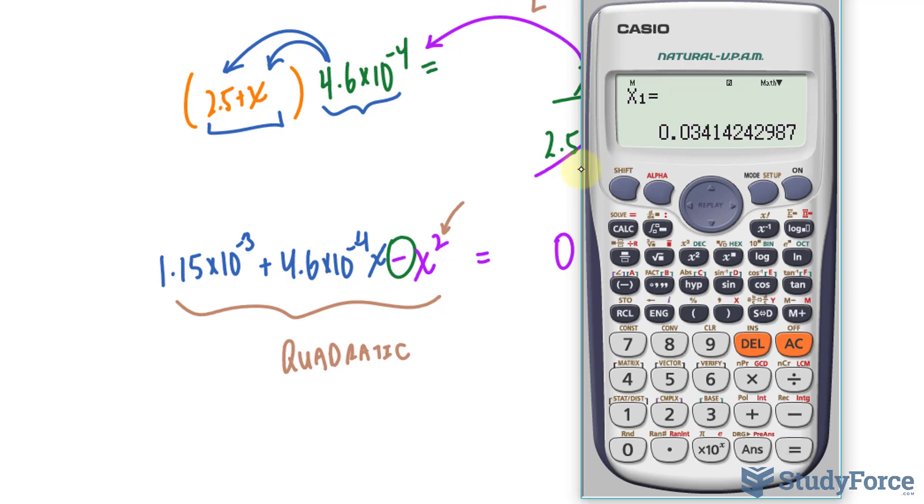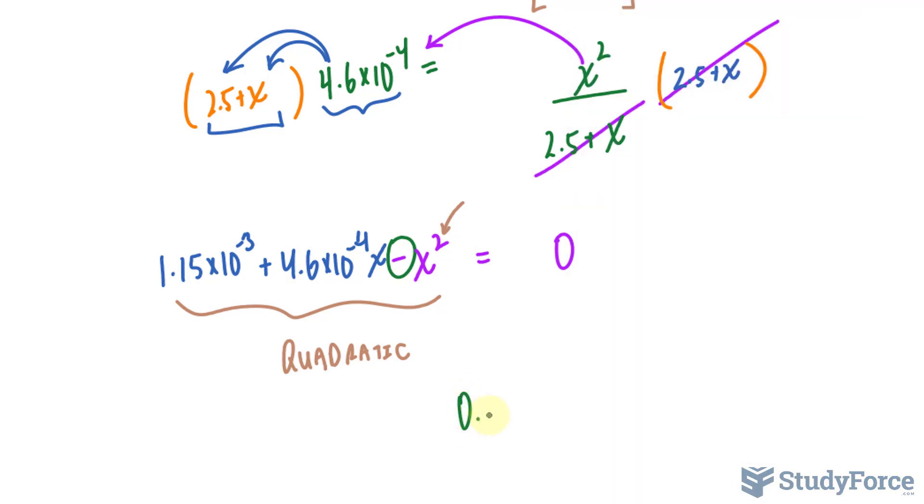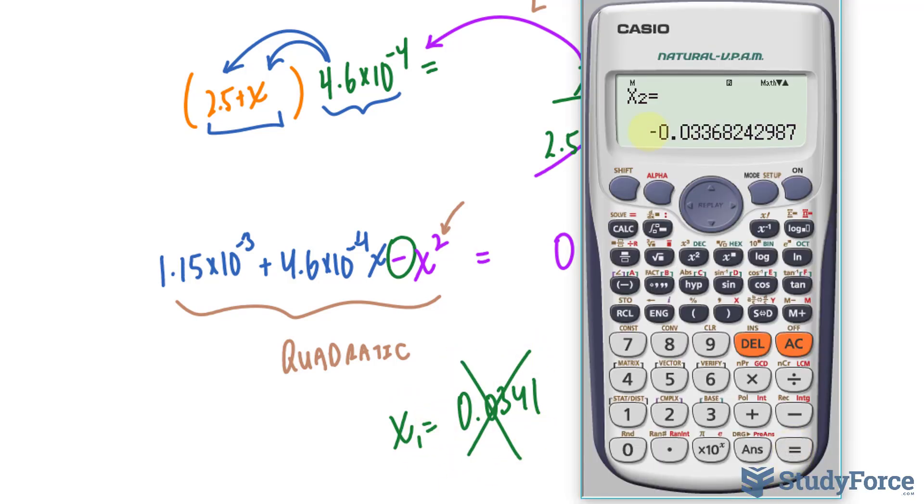We end up with two answers. One that's 0.0341. I'm going to omit this one. This is incorrect and I'm going to explain why. And the other is negative 0.0336.